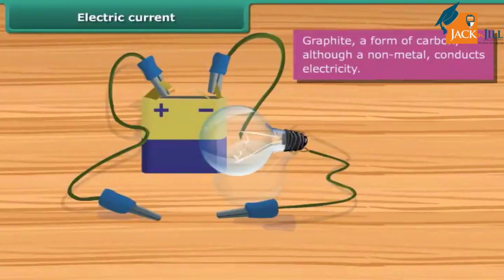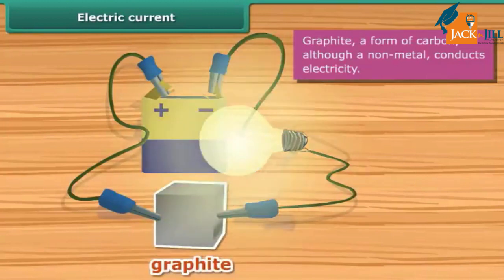Bring the free ends of the two wires close. Now let them touch each other. If the bulb glows, the material is electrically conducting, otherwise it is an insulator.